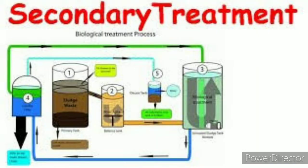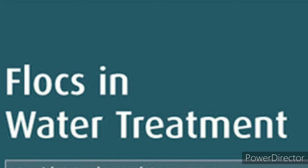In secondary treatment, or biological treatment, the primary effluent is passed into large aeration tanks where it is constantly agitated mechanically and air is pumped into it. This allows vigorous growth of useful aerobic microbes into flocs. Flocs are masses of bacteria associated with fungal filaments to form mesh-like structures. While growing, these microbes consume the major part of the organic matter in the effluent.